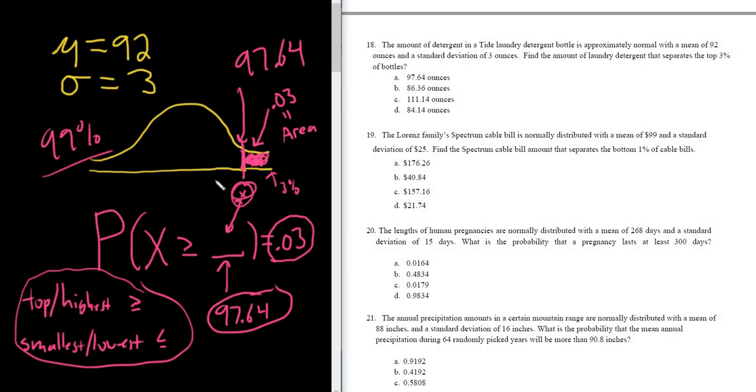This is called a cutoff value problem. That's what it's called because we found the cutoff value. This is the cutoff value. This value separates the top 3% from everyone else. So I hope this video has been helpful. Good luck.